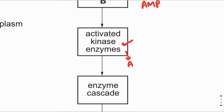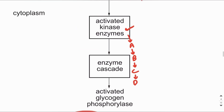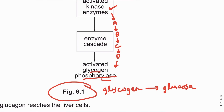The protein kinase enzyme activates several enzymes in series via phosphorylation — enzyme A activates enzyme B, enzyme B activates enzyme C, and so on. Eventually the last enzyme in the cascade — glycogen phosphorylase — is activated. Glycogen phosphorylase breaks down glycogen into glucose, a process known as glycogenolysis.